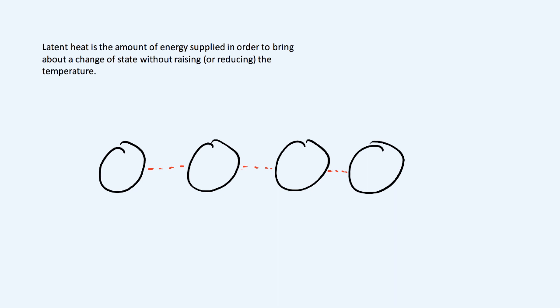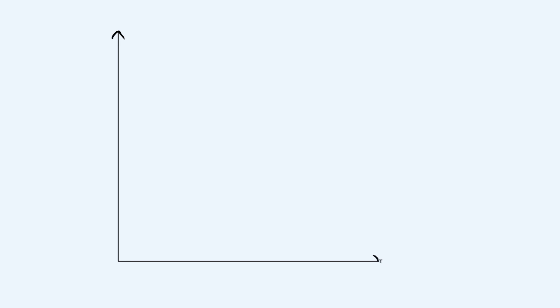You'll often be asked to explain a graph in questions. On the x-axis is time — in any units, seconds or minutes — and on the y-axis is temperature in degrees Celsius or Kelvin. What's assumed is that you're constantly supplying heat energy throughout the graph — that's important.